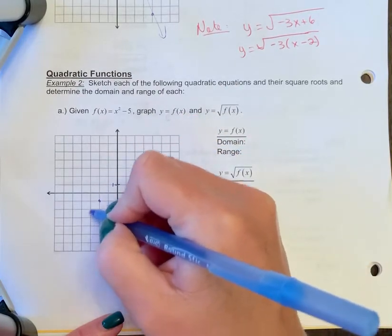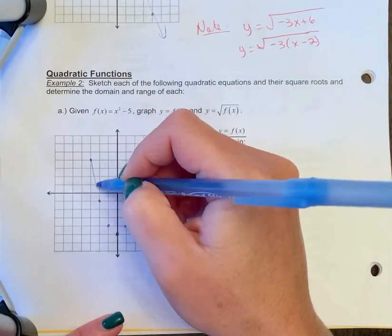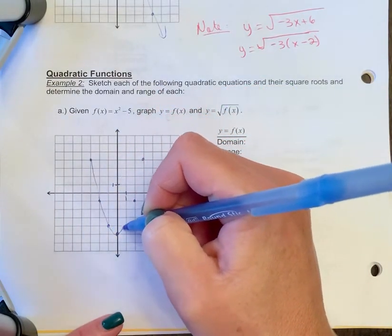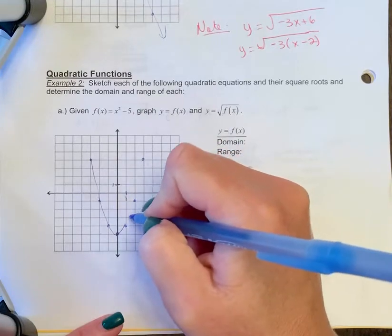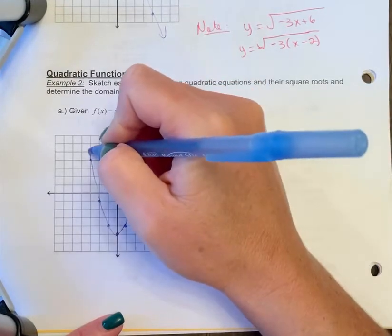So over 3, up 9. Okay, and now I'm going to draw my curve through there. And we'll kind of extend that a little bit.